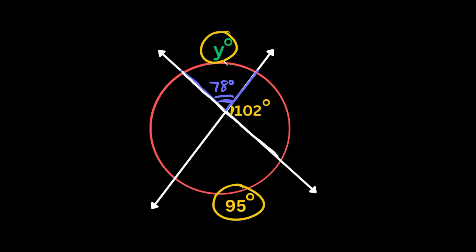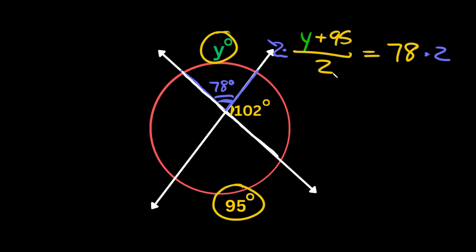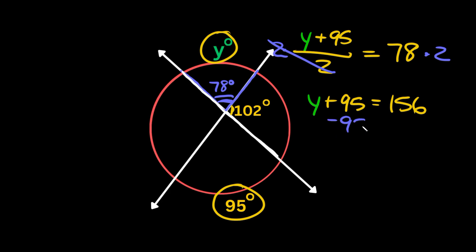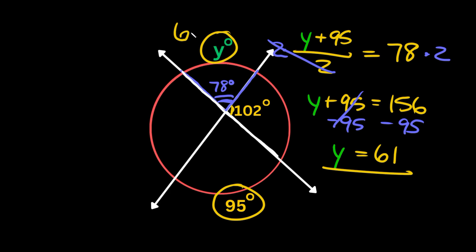Now that we know the angle measure and one arc measure, we can set up an equation. Adding the two arc measures — Y plus 95 — and dividing by two should equal the angle measure of 78. Multiplying both sides by two gives us Y plus 95 equals 156. Subtracting 95 from both sides, we get Y equals 61. So this arc measure is 61 degrees.